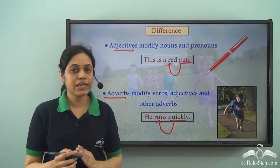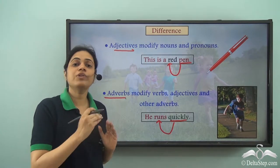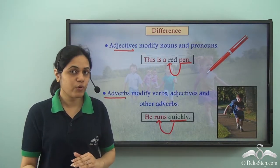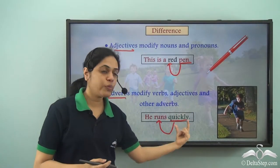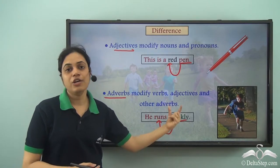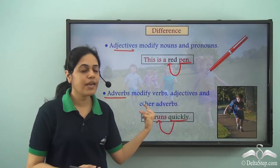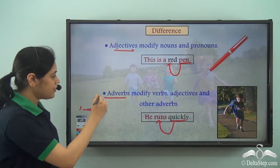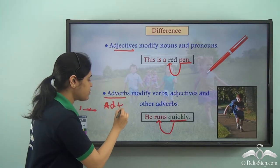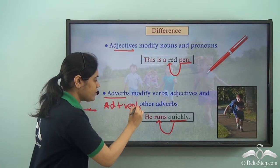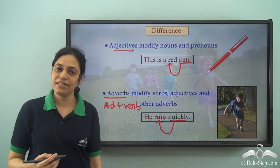If I were to say 'He is quick,' in that case quick describes how he is, and he is a pronoun — so quick is an adjective. But in 'He runs quickly,' quickly describes how he runs, not how he is. It is describing the verb, so it is an adverb. Remember: adverb is add plus verb — something which adds more meaning to a verb.